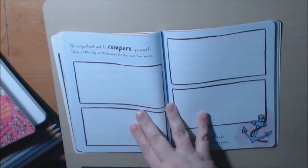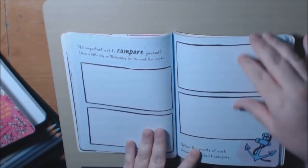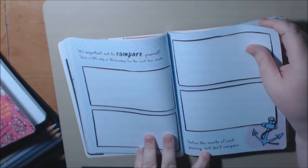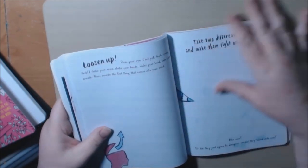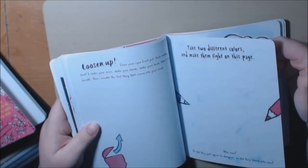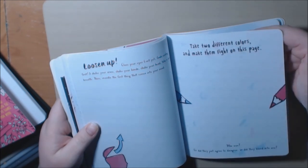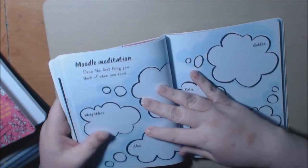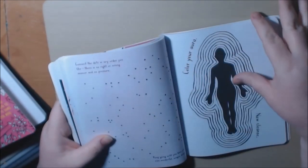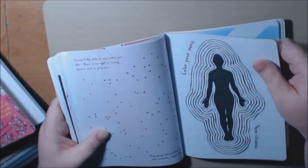Not to compare yourself. Draw a little ship on Wednesday for the next four weeks. Notice the merits of each drawing, but don't compare them. Loosen up. Take two different colors and make them fight on this page. Who won? Some of you are really cute. Color your aura.